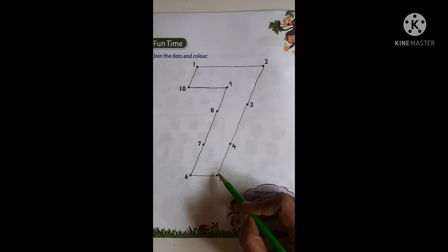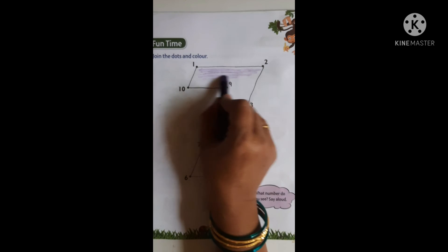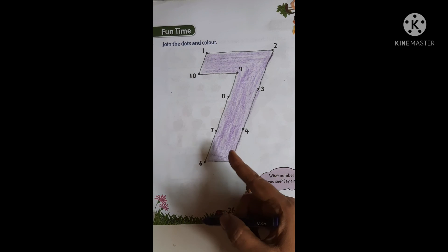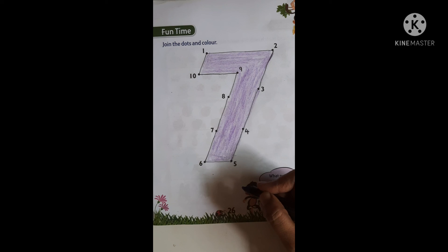Kids, take your crayon. Slowly color it, children. Don't go outside the lines. Kids, complete this activity. Thank you.